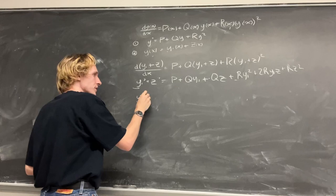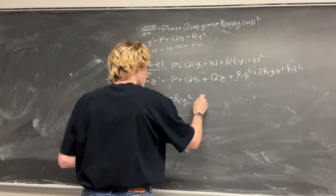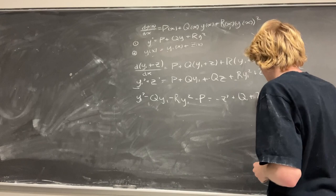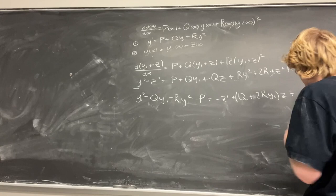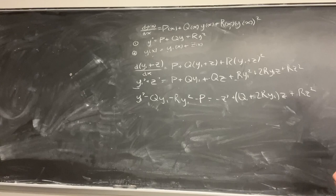We'll say y_particular' - qy' - ry_particular' - p, which is equal to -z', which is equal to -z(q + 2ry_particular), and we're going to factor out the z here, plus rz². What you'll notice here is that this is actually just a Bernoulli equation.